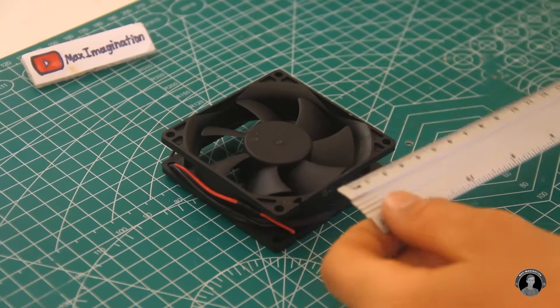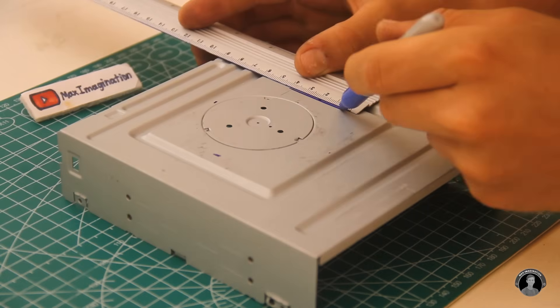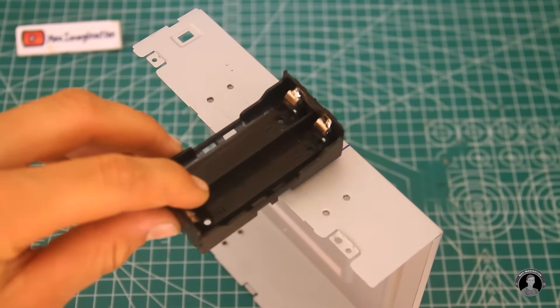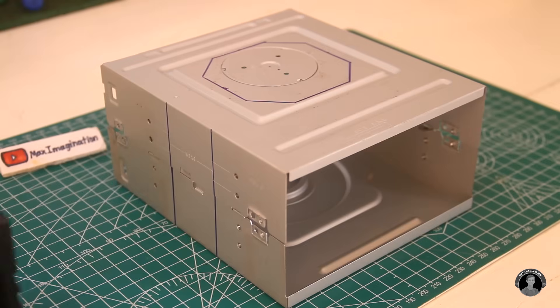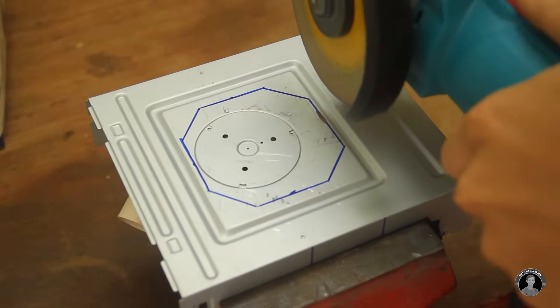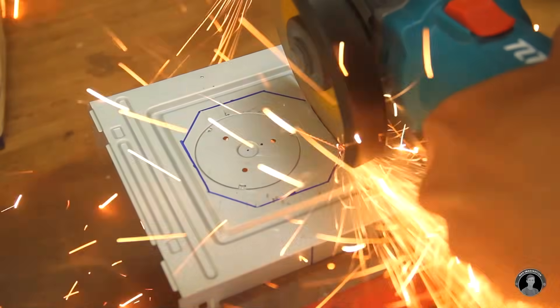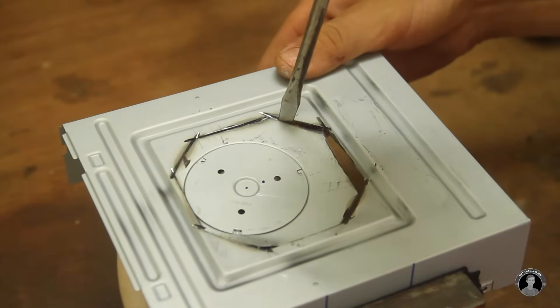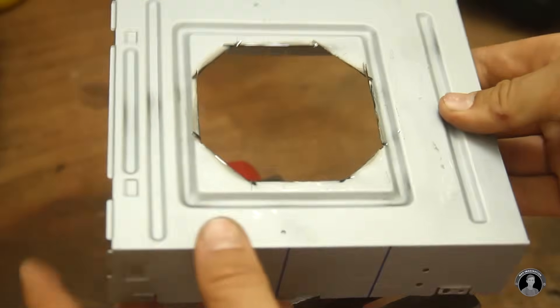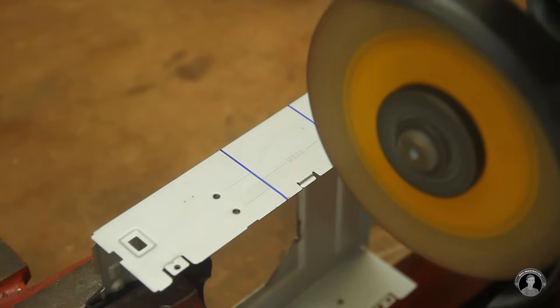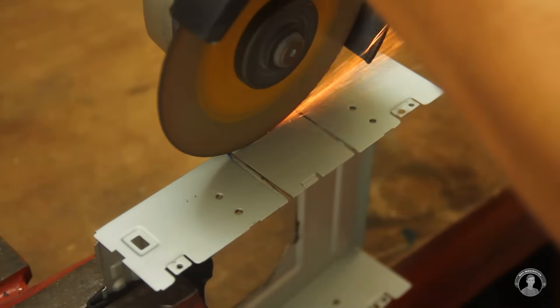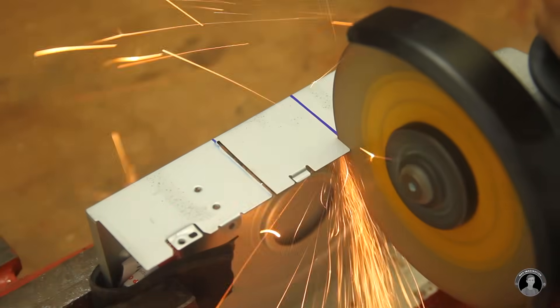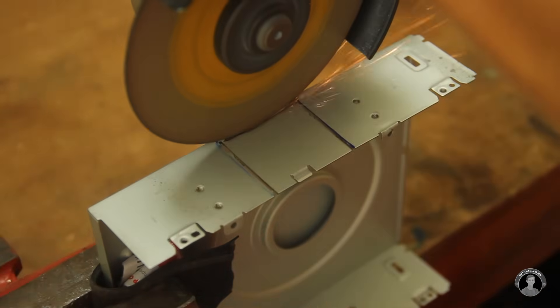It's now time to cut out areas on the upper and lower shelves for components like the fan and battery tray to poke out through.